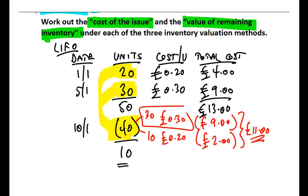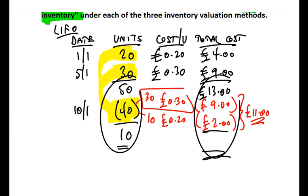Well, the other figure we want to calculate is the value of the remaining inventory. Well, again, with issues or sales, you just knock off the figures. So we've knocked off the units, we can just knock off the cost as well. Well, £13 less a total of £11 is £2 as the value of the remaining 10 bananas.